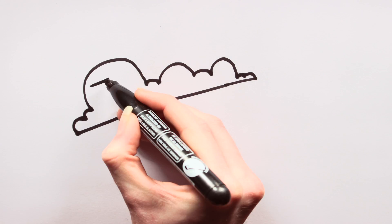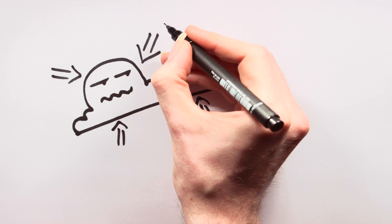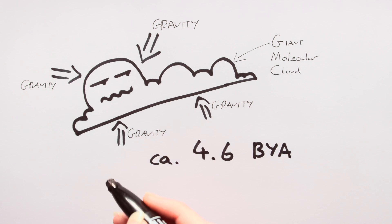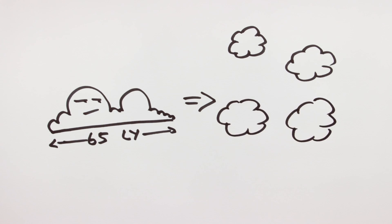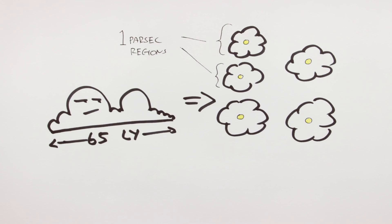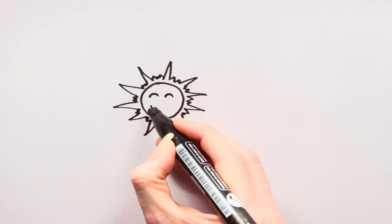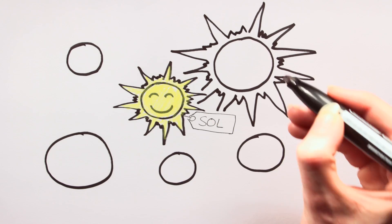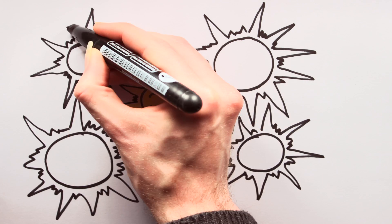So this particular story starts 4.6 billion years ago, when gravity caused a giant molecular cloud to collapse and begin forming our sun. The cloud that spawned our sun is thought to have measured 65 light years across. As it collapsed, it fragmented into several 1 parsec wide regions, and inside each of these regions a star began to form. Scientists believe that our sun formed within a cluster of several thousand other stars.